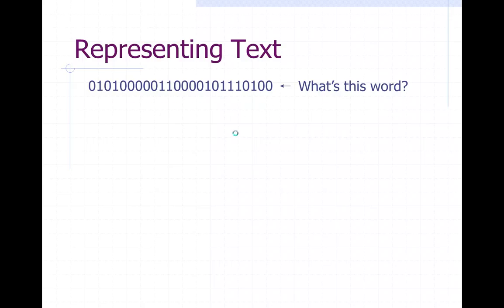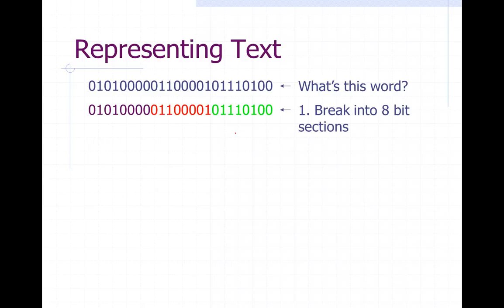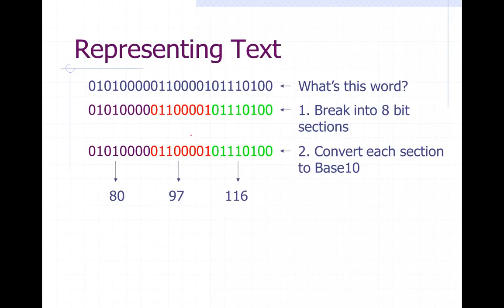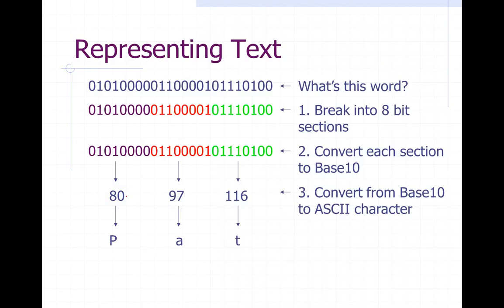You can also go in the other direction. Given a binary string, remember every eight bits is a different character — so break it up into eight-bit chunks. For each chunk, determine what decimal number it corresponds to using the binary-to-base-10 conversion from the previous lecture. Then look it up on the ASCII table to find the corresponding letter. That gives you the word — for example, 'Pat' — and that's the process. Very simple.